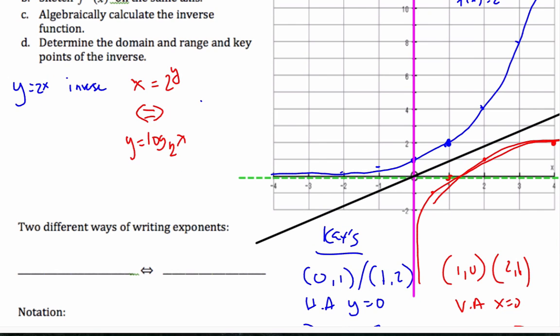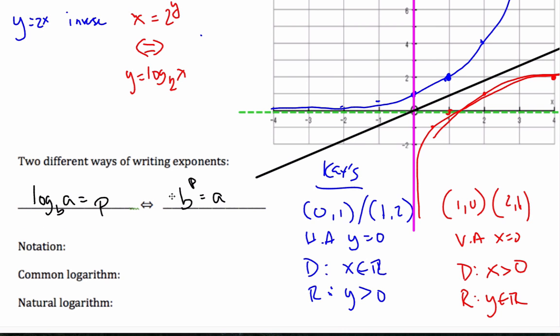And what I can recognize is I can say that if I have log to some base b of a is equal to p, that is exactly the same thing as saying base b to some power p is equal to a. These are exactly the same statement, just written different ways. That's what logarithms mean. It means the base, this is the exponent, to this base produces a. And so this is a true relationship.